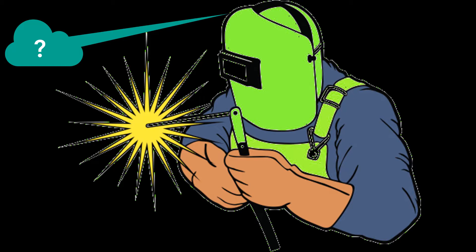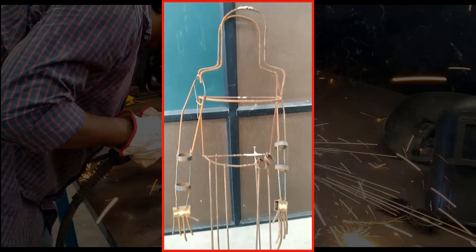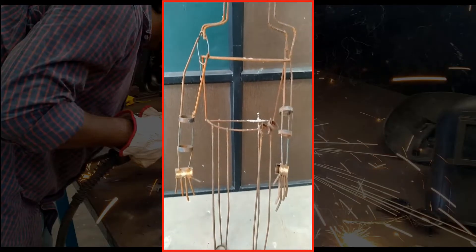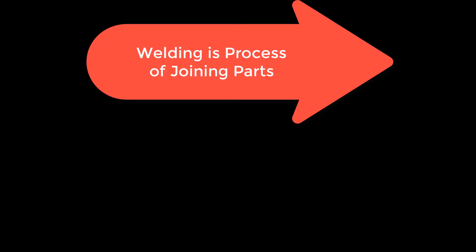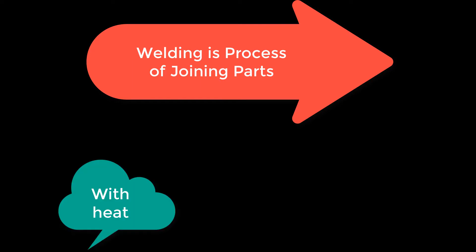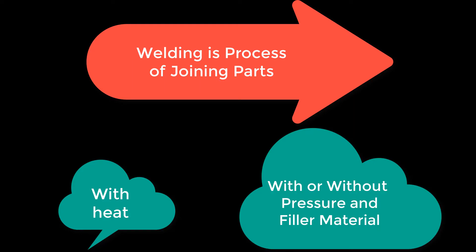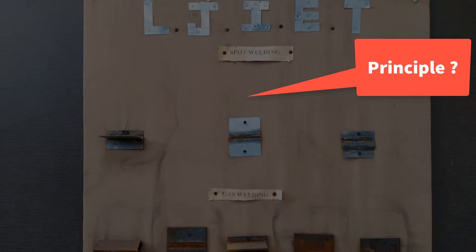Welding is a permanent metal joining process. It means we can make a permanent joint with the help of welding. Welding is a process used for joining two parts, where with the help of heat we can melt the metal and combine the two parts. In some cases we also use pressure as well as filler material.